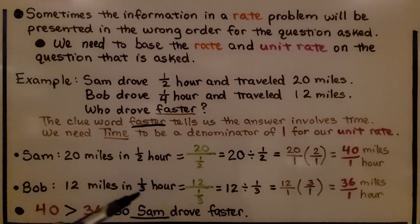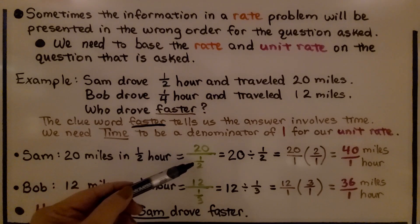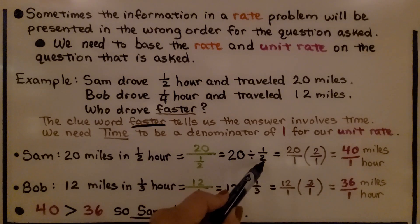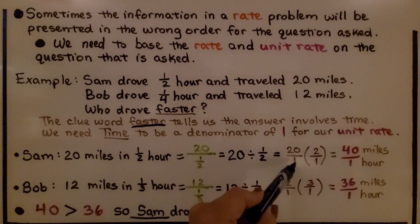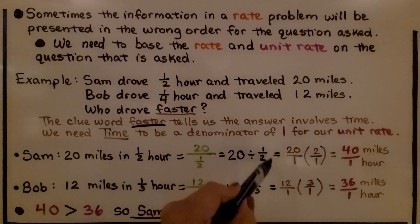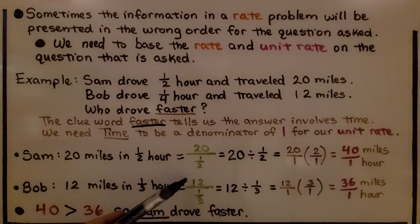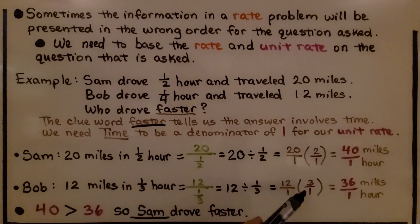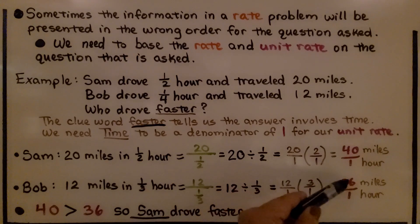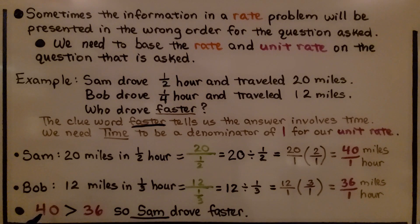Just flip it around to its correct order. For Sam's compound fraction, we have 20 over 1/2 — that means 20 divided by 1/2. We rewrite it as 20/1 multiplied by the reciprocal of 1/2, which is 2/1. We get 40 miles over 1 hour. For Bob, we have 12 over 1/3, that's 12 divided by 1/3. We rewrite it as 12/1 multiplied by the reciprocal of 1/3, which is 3/1. We get 12 times 3 is 36, so 36 miles in 1 hour. Since 40 is greater than 36, Sam drove faster — 40 miles per hour versus 36 miles per hour.